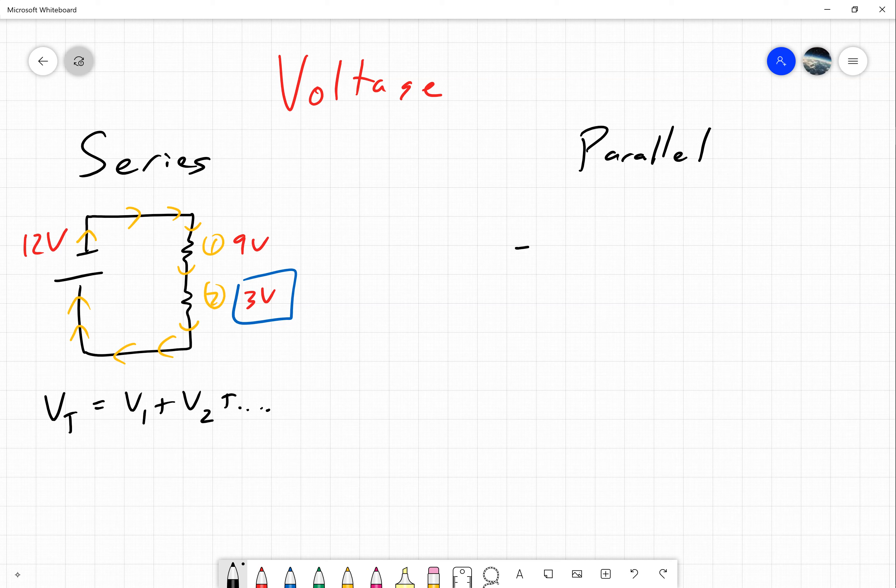Now if we were to talk about circuits in parallel, an example of a parallel circuit looks like this. We know this is going to be a parallel circuit because there's going to be two pathways the electrons could go on. They could take this pathway that the green electrons are going on, or they can take the pathway that the red electrons are going on.